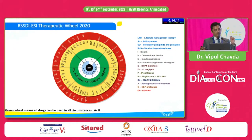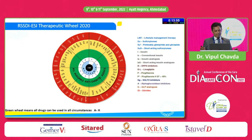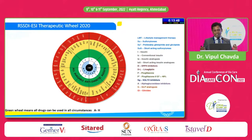The RSSDI ESI Therapeutic Wheel is an intelligent tool for all clinical practitioners using diabetic medicines. It uses the ABCDEFGH framework: A for Age of the patient, B for BMI, C for CKD, D for Duration of diabetes, E for Established ASCVD, F for Finance, G for Glycemic status, and H for Hypoglycemia.